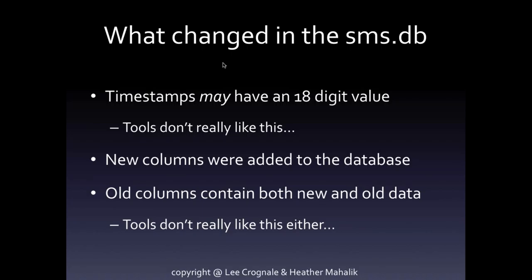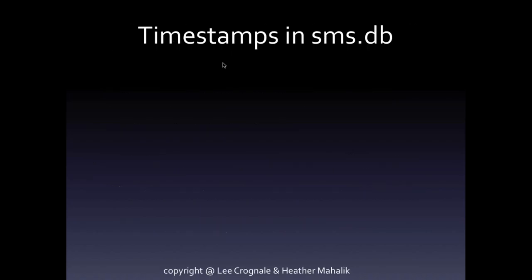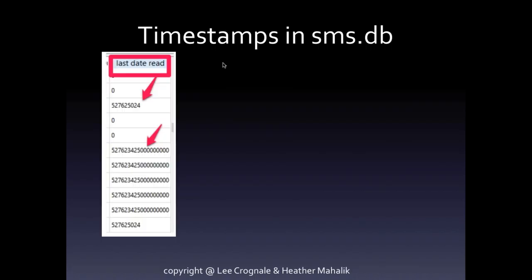So what did change in the SMS? The path is the same. The database that's used is the same. But the timestamps — some of them have an 18-digit value, and some of them don't. The first time I've ever seen this 18-digit value was iOS 11. The tools do not like this. The tools need the columns to have all the same data sets or integers in order to parse correctly. There are also new columns added to the database. With iOS 11, new columns were added and they're actually used and contain useful information.